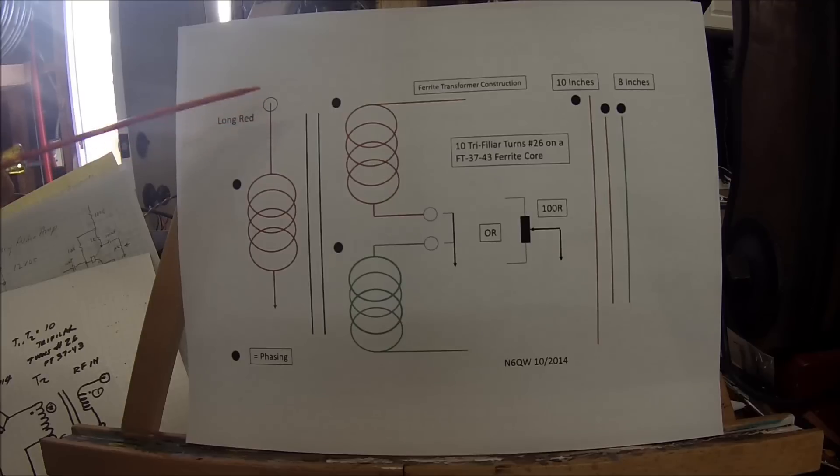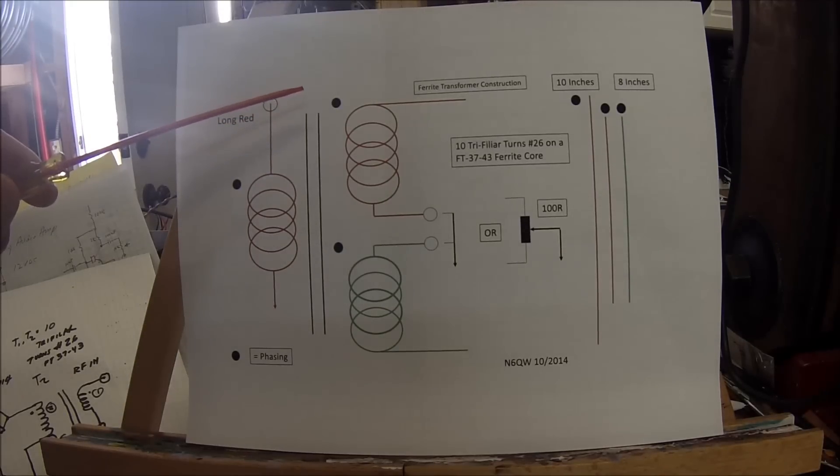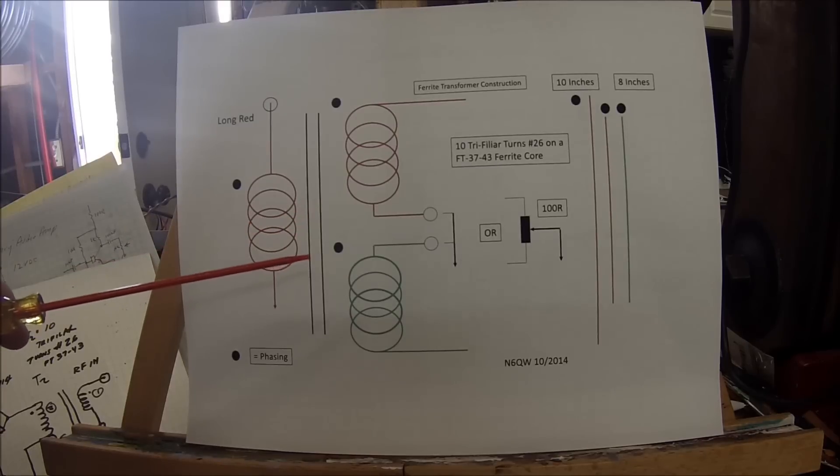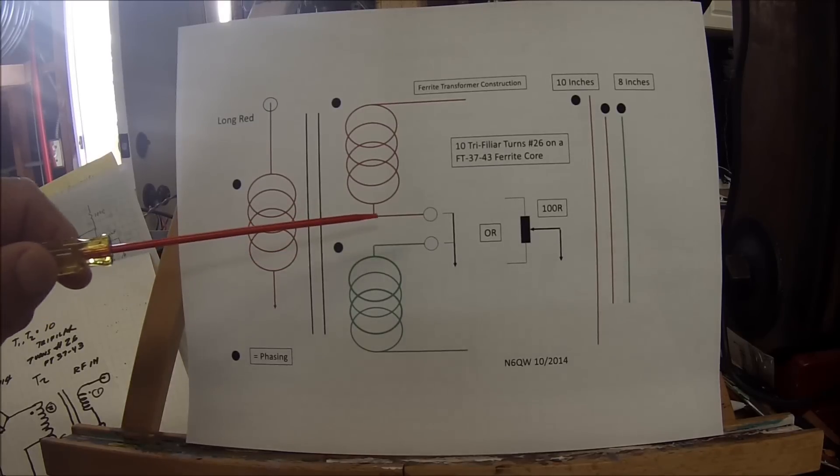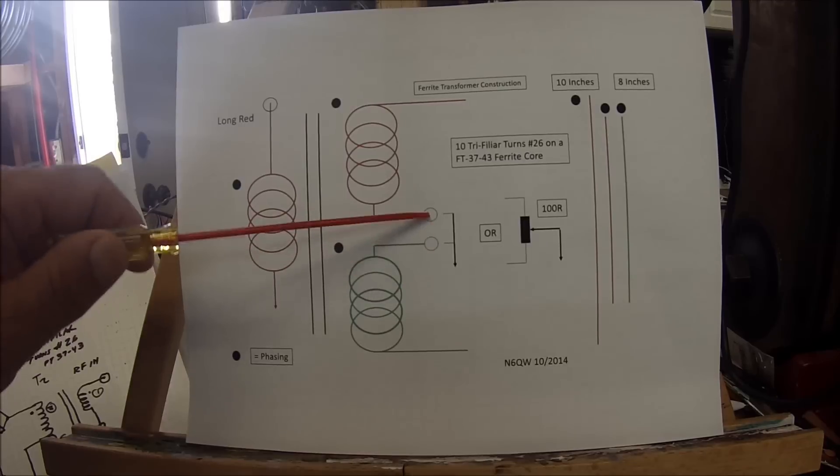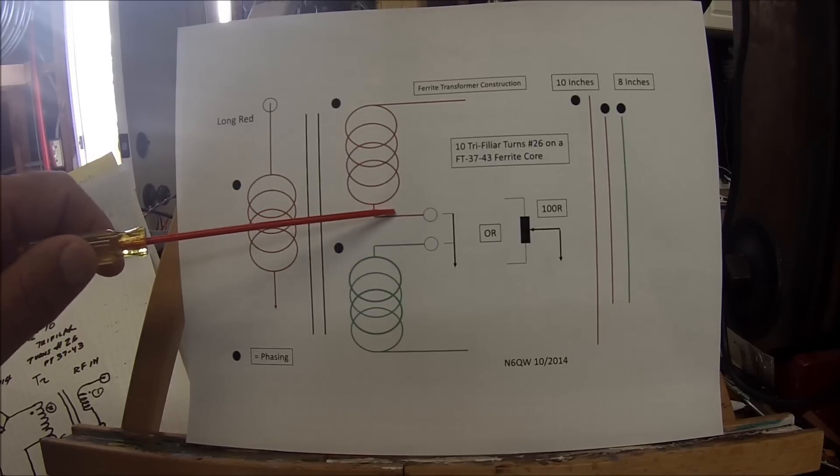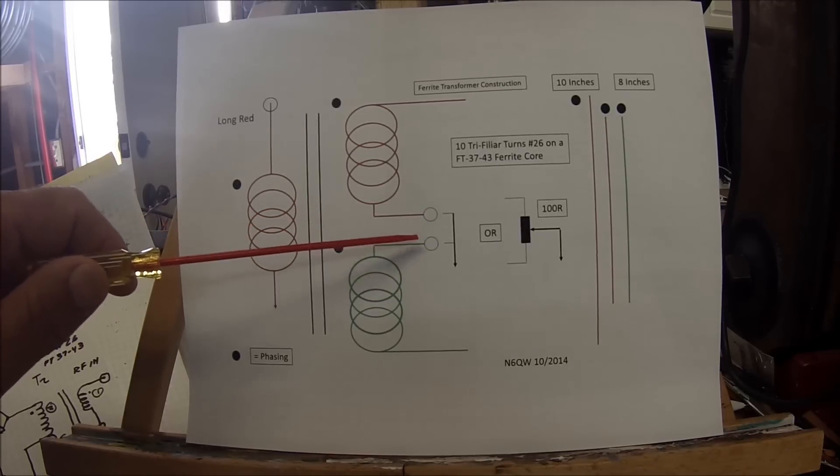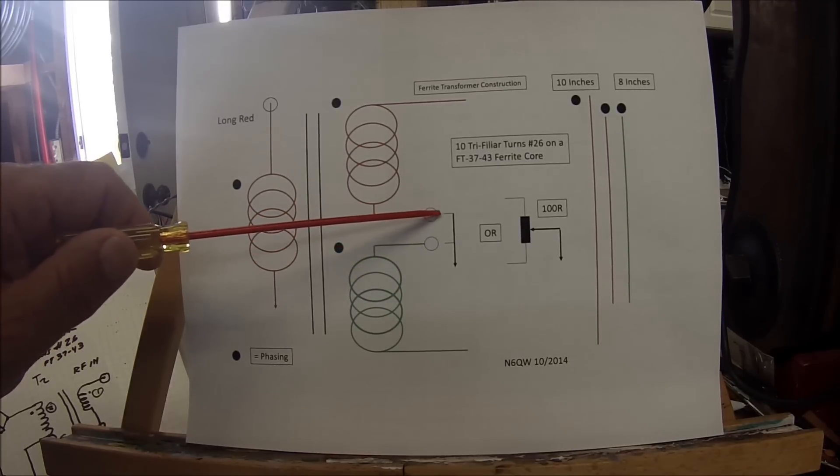The problem so many times is that you're not able to tell which winding is which. A critical point is this connection at the end of winding number two to the start of winding number three. Typically you can just connect these two, and this is a ground connection point right here.